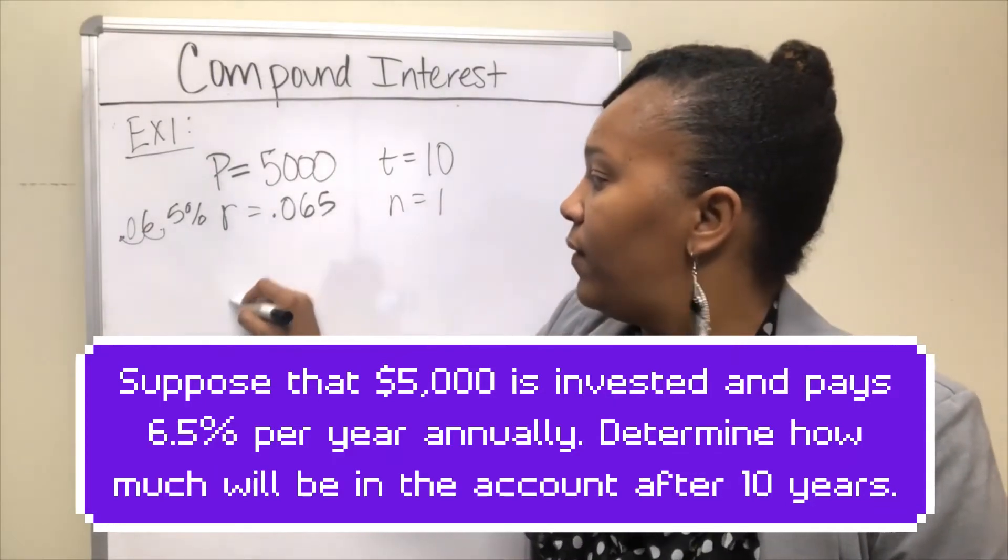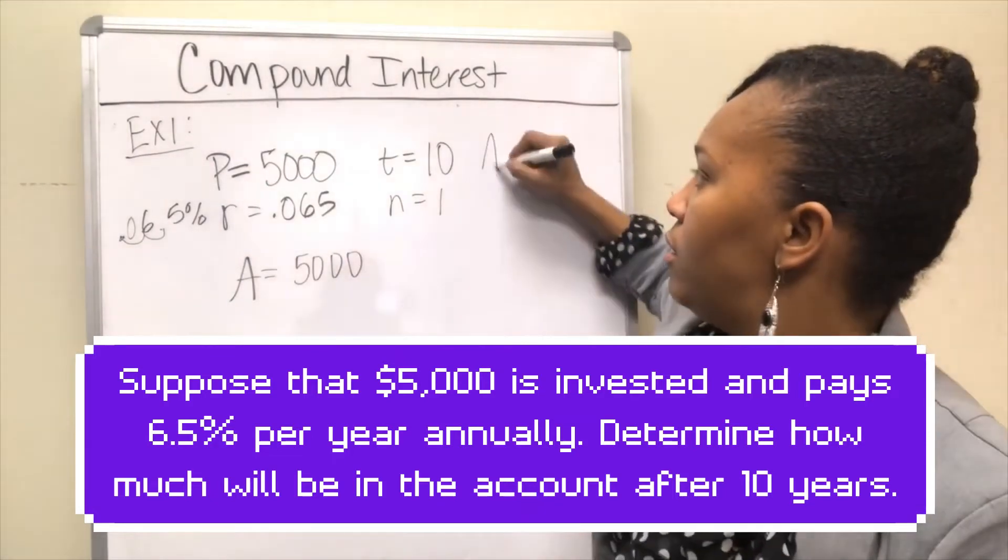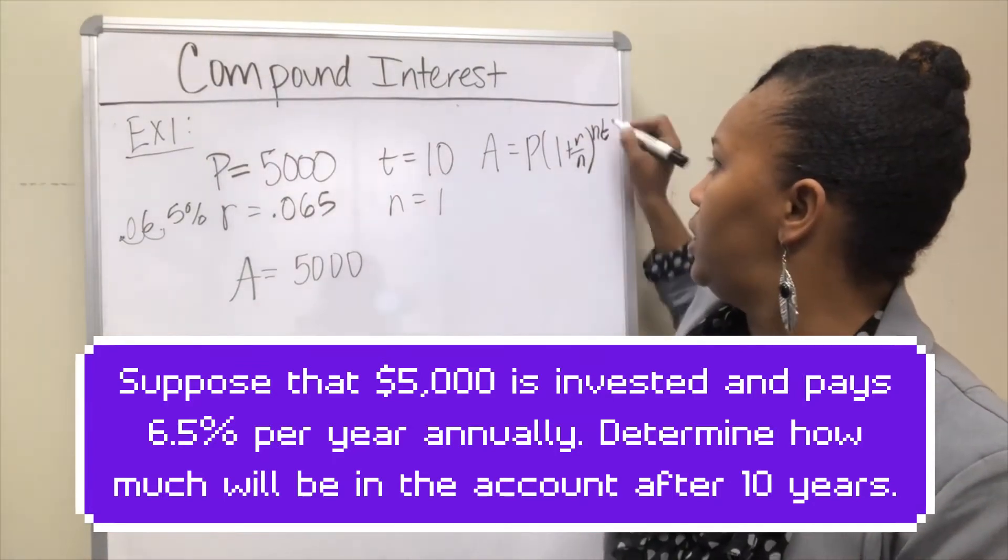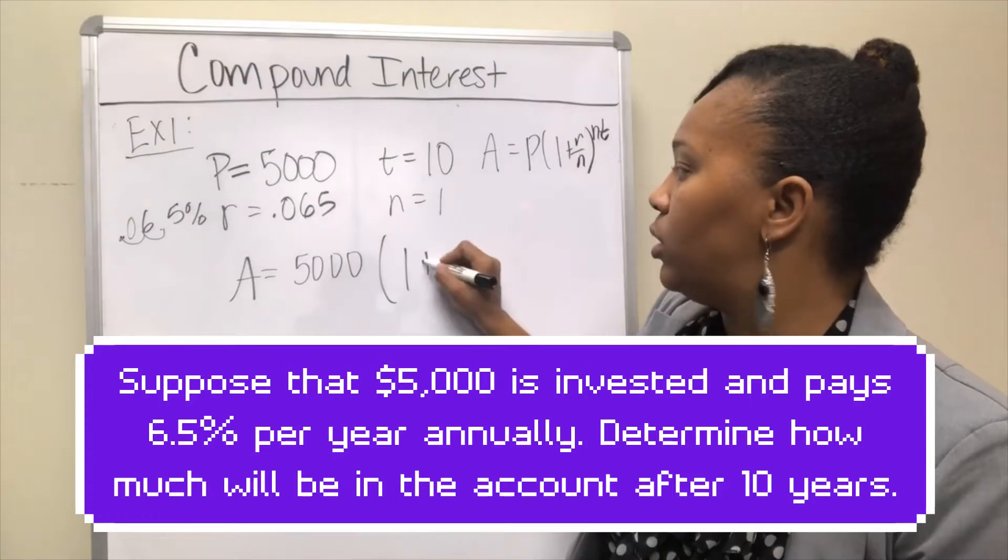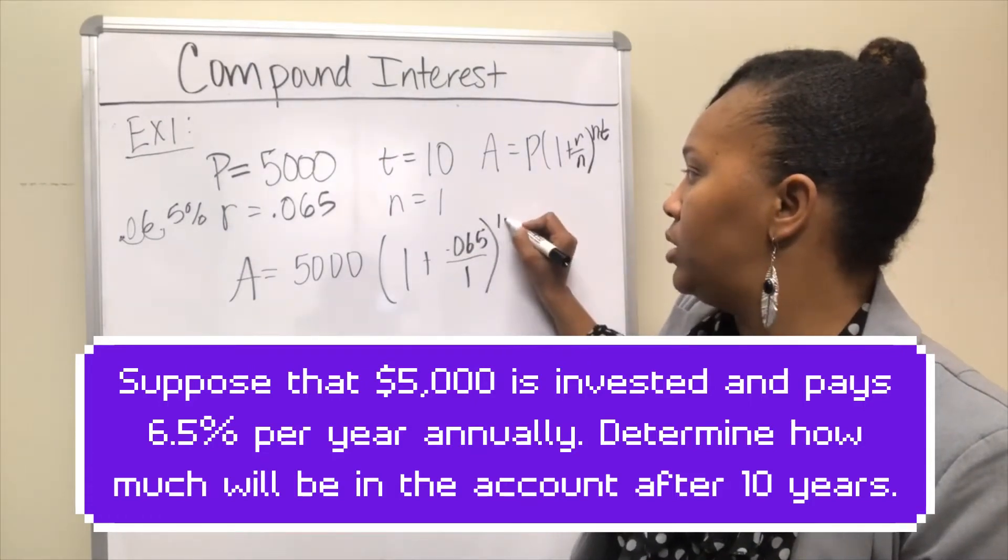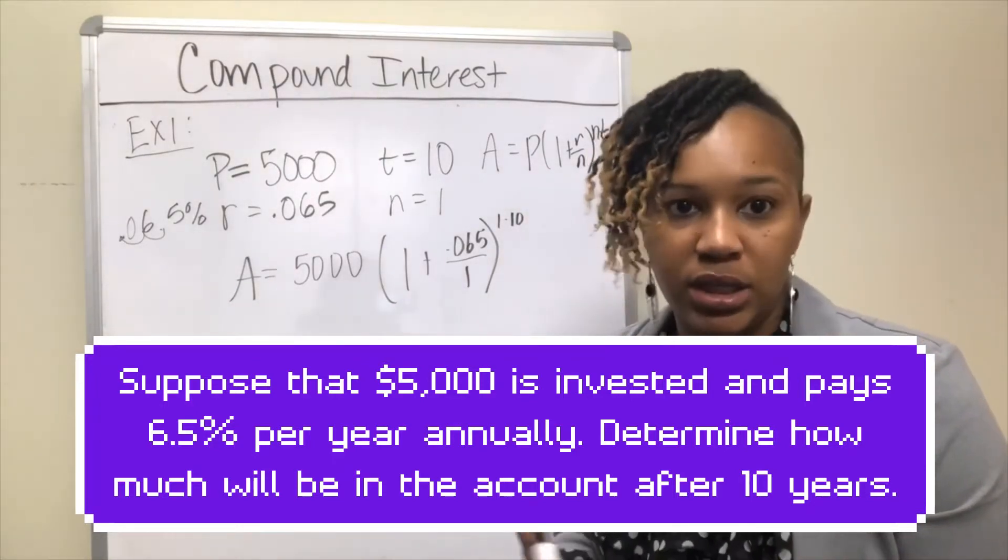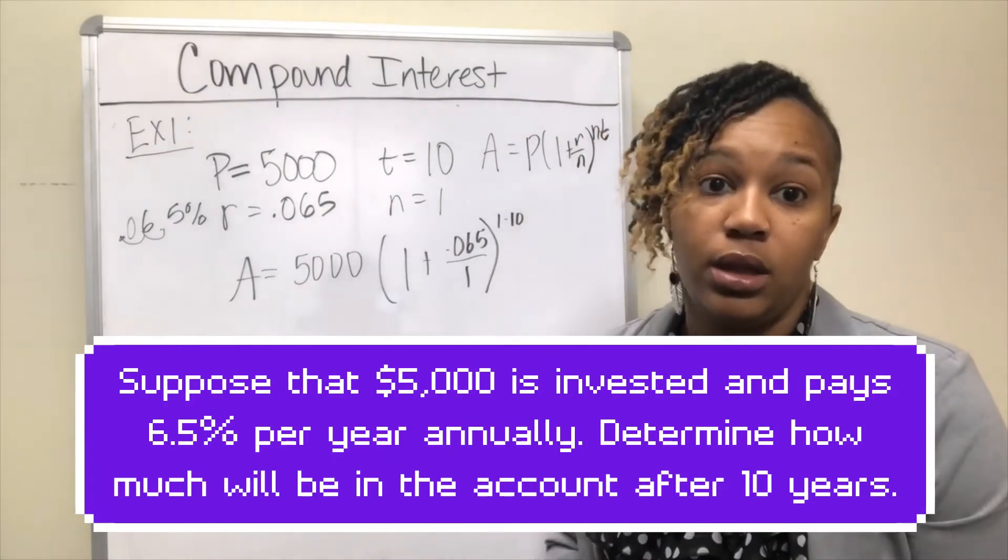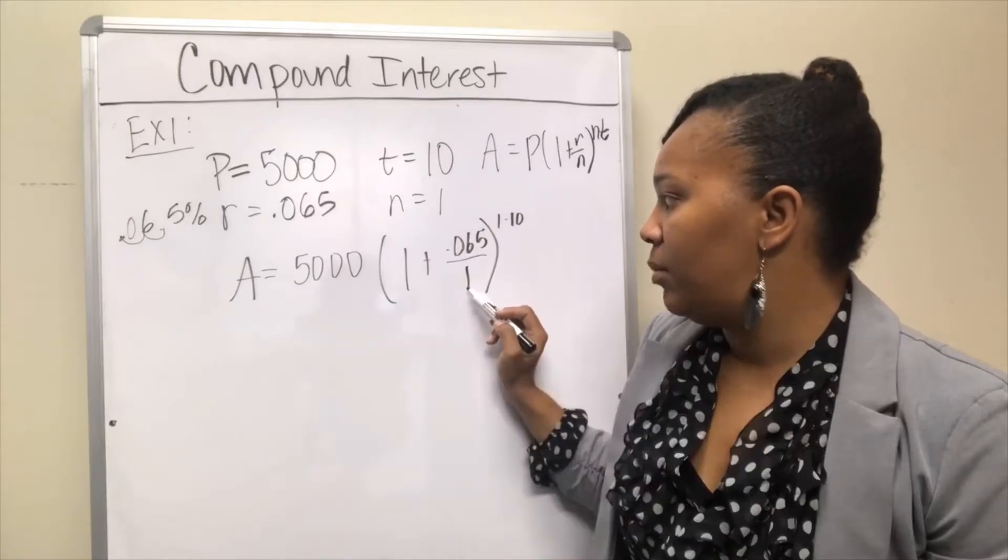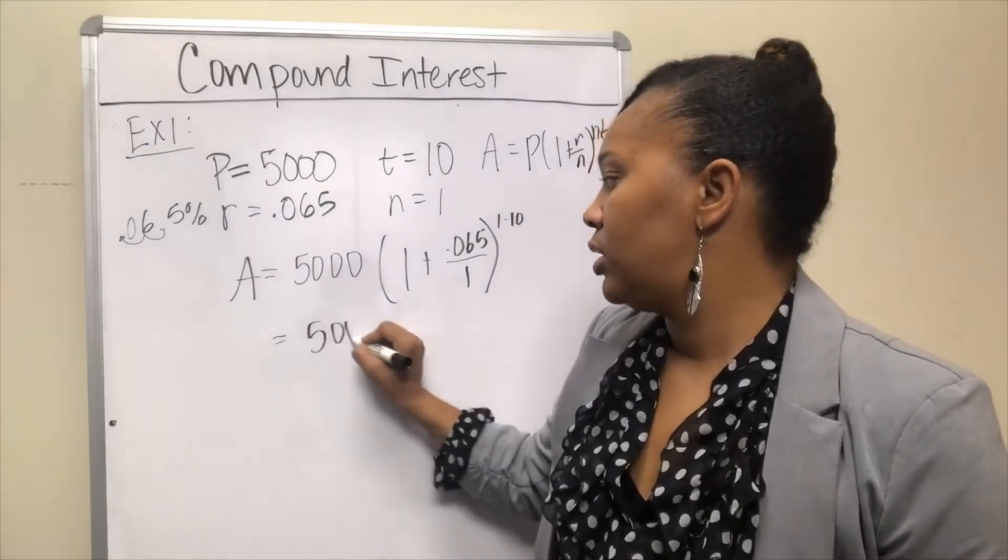To find A, you just plug in all those numbers into your formula. Recall that your formula is P times 1 plus R over N raised to the N times T. So 5,000 times 1 plus 0.065 all over 1 raised to the 1 times 10. When you're working these, the most challenging thing is actually putting it in the calculator. Start with the innermost parentheses: 0.065 divided by 1 is 0.065, add the 1 to it, that's 1.065.